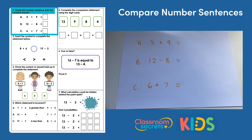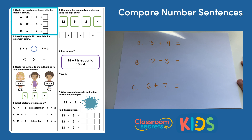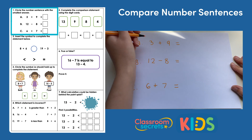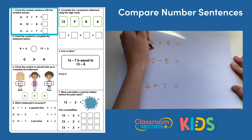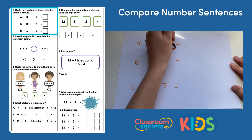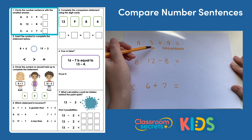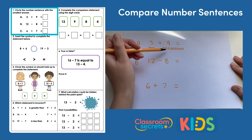Circle the number sentence with the smallest answer. So we need to find out the answers to each calculation to find the smallest answer. To do this I'm going to draw my dots. You could count on in your head or count by using a number line. So I'm going to do three add nine, which is three dots and nine more dots. I'm going to start from nine and count on three to get to my answer.